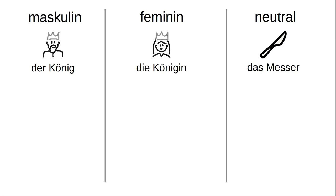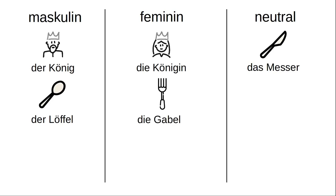Now you might think that everything that isn't clearly male or female, like kings and queens, would fall into neuter — but unfortunately it doesn't work that way. For example, 'der Löffel', the spoon, is masculine, and 'die Gabel', the fork, is feminine.